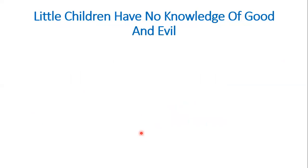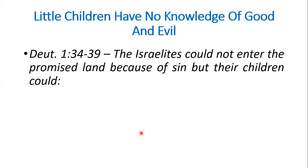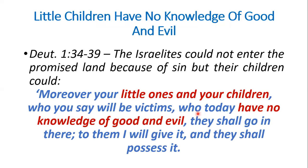Little children have no knowledge of good and evil. There's a passage in the Old Testament I want to reference — Deuteronomy chapter 1, verse 34 to 39. The Israelites could not enter the promised land because of sin. God was specific that they sinned and would not enter. But there was a statement made about their children. Verse 39 says: 'Moreover, your little ones and your children, who you say will be victims, who today have no knowledge of good and evil — they shall go in there,' referring to the promised land, 'to them I will give it and they shall possess it.'